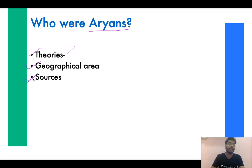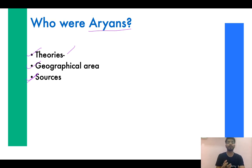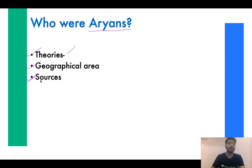We will study through sources how Early Vedic period people were settled in the Saptasindhu region. Obviously, if we claim people were settled there, there must be sources authenticating this. Literary sources will mention this, and archaeological findings will also provide evidence about the traits they followed.